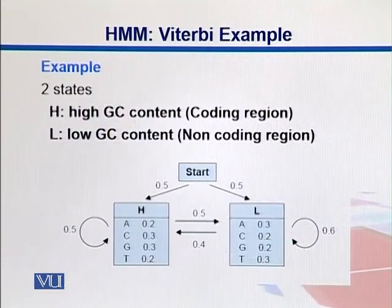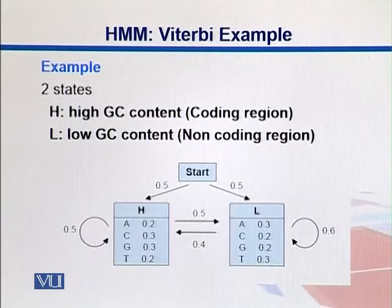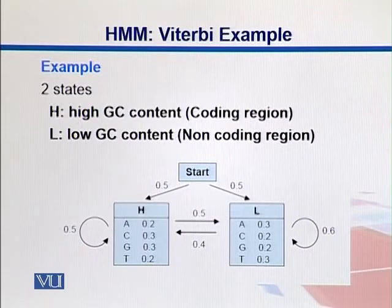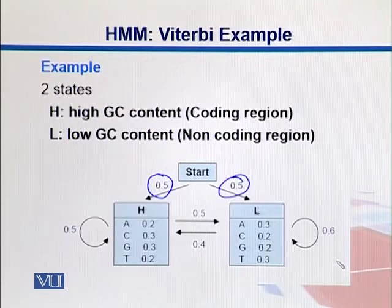In this example, we have two states: H for high GC content, coming from coding regions, and L for low GC content from non-coding regions. Our Q equals 2, representing high and low states. We can start from anywhere with probability 0.5 for each, so it's quite fair.